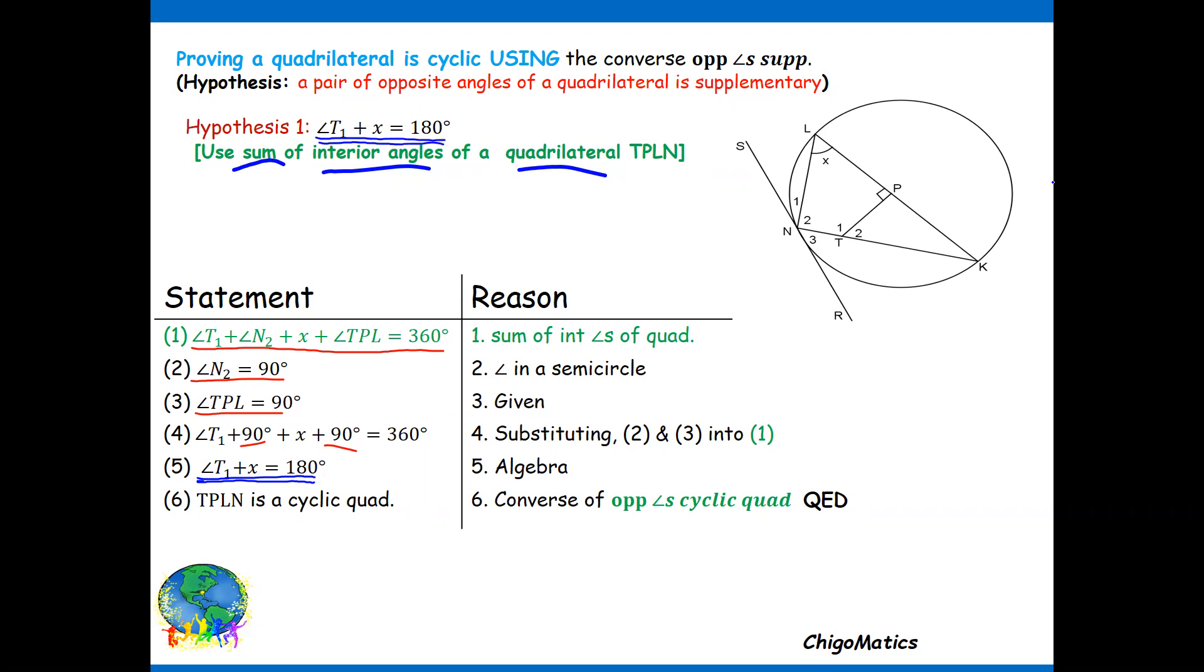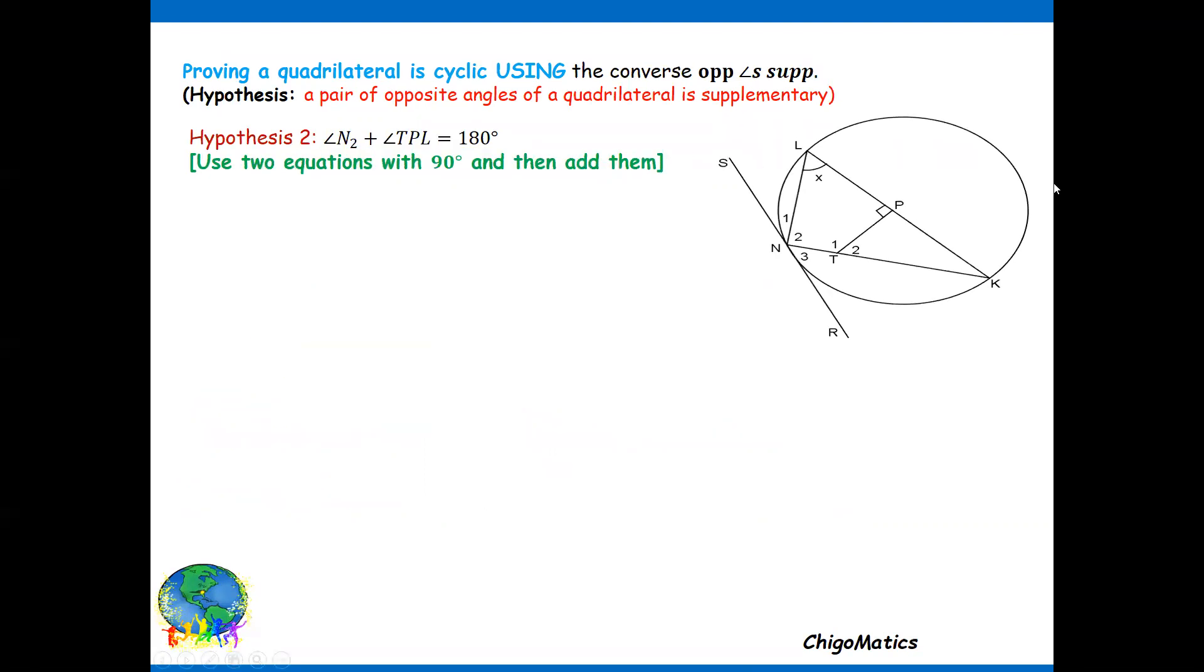Hypothesis number two: N2 plus angle TPL equals 180. So N2 is this angle, then TPL is this angle. So in this case I can no longer add the... if I add the inside I'm repeating. I won't reach that far, isn't it?